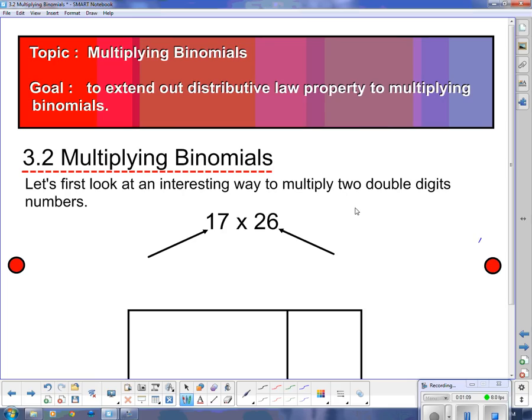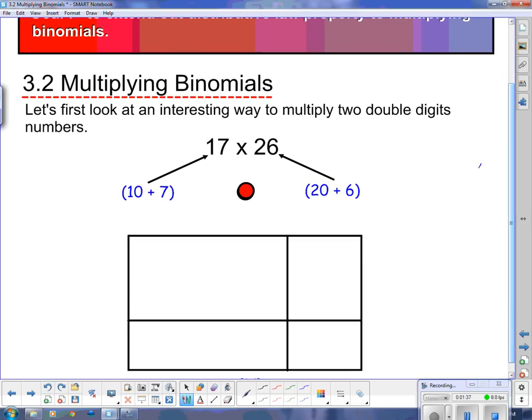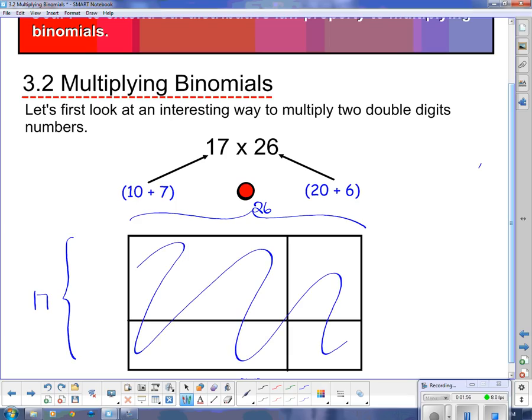So I want you to notice that this 17 can be written kind of like a binomial if I say that it's 10 plus 7. And the same with this 26, I can write it kind of as a binomial. I can write it as two constants with a plus or a minus between them, and we get 20 plus 6. Now what this does is it gives us an interesting way to multiply this. If I call this side 17 and this side over here is our 26, instead of just saying it's 17 by 26, and you guys hopefully know that the area will be 17 times 26.